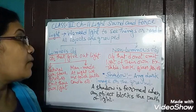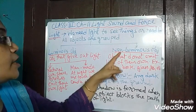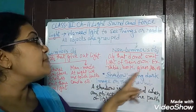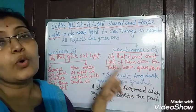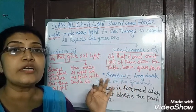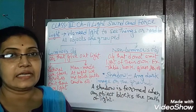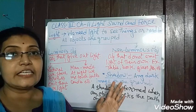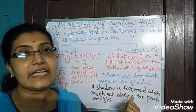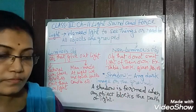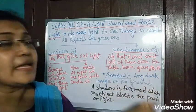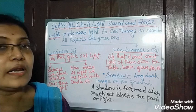Now our next point is non-luminous objects. These are objects that do not emit light of their own — they are lit by the sun or other light sources. Examples include table, book, glass, pen, pencil, wall, and so on.